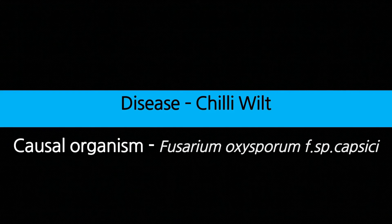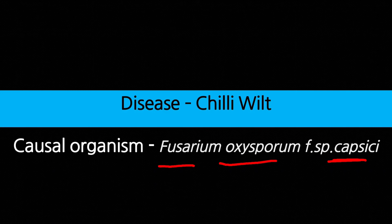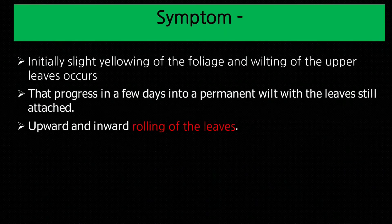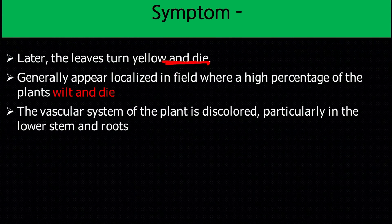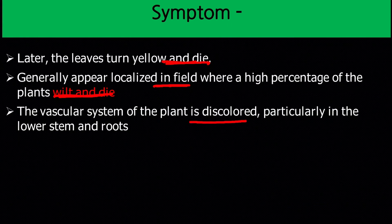Wilt disease of chili and capsicum. Chili wilt is caused by Fusarium oxysporum forma specialis capsici. This is a fungus which belongs to subdivision Deuteromycotina. Symptom: initially slight yellowing of the foliage and wilting of the upper tips occurs, that progresses in a few days into permanent wilting with leaves still attached, and upward and inward rolling of the leaves.